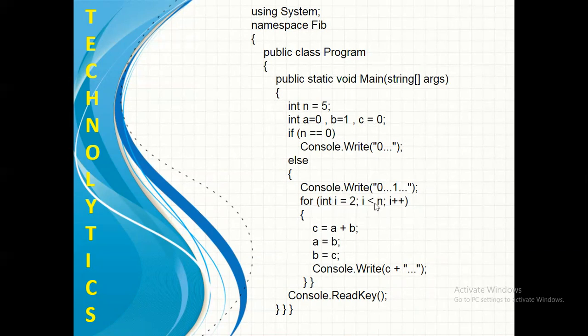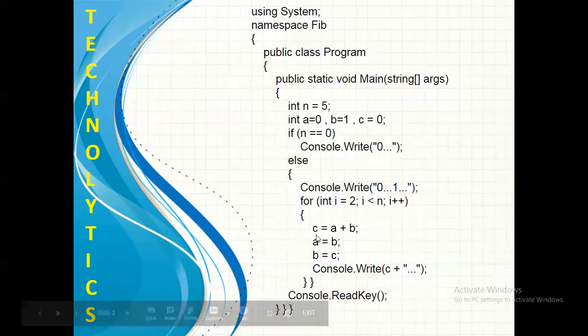Here, in our case, n value is 5. So, this loop will run for 2, 3 and 4. That means, 3 times it will run. Now, what will happen in this loop?